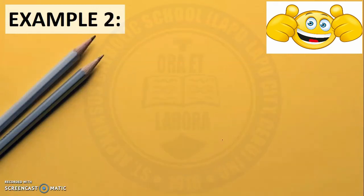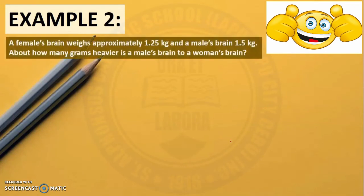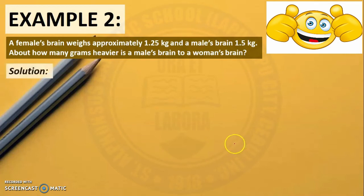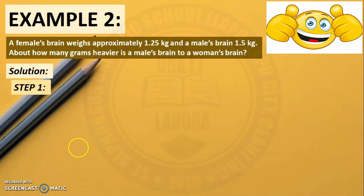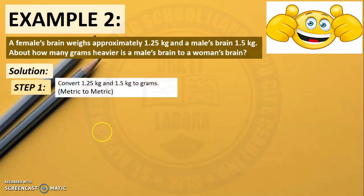Now, let's have our second example. A female's brain weighs approximately 1.25 kilograms and a male's brain 1.5 kilograms. About how many grams heavier is a male's brain than a female's brain? Step 1: Convert the unit to the desired unit. The given measurements should have the same units. Since 1.25 kilograms and 1.5 kilograms are asked to be converted into grams, we will convert both to grams. This is a metric to metric conversion.